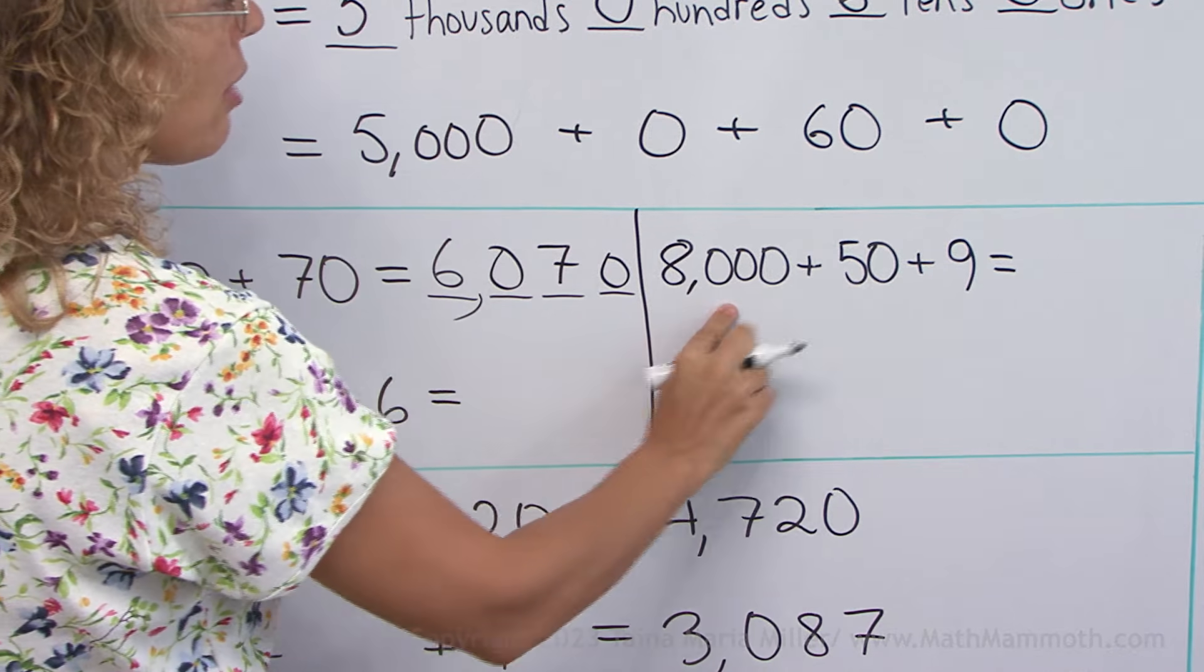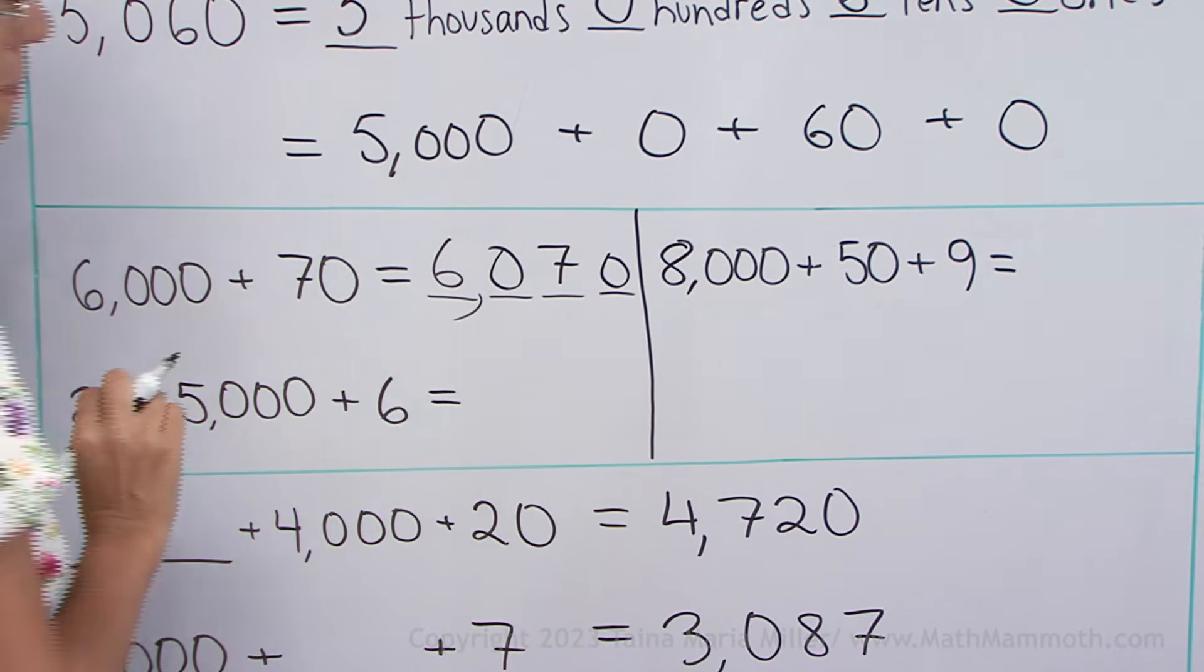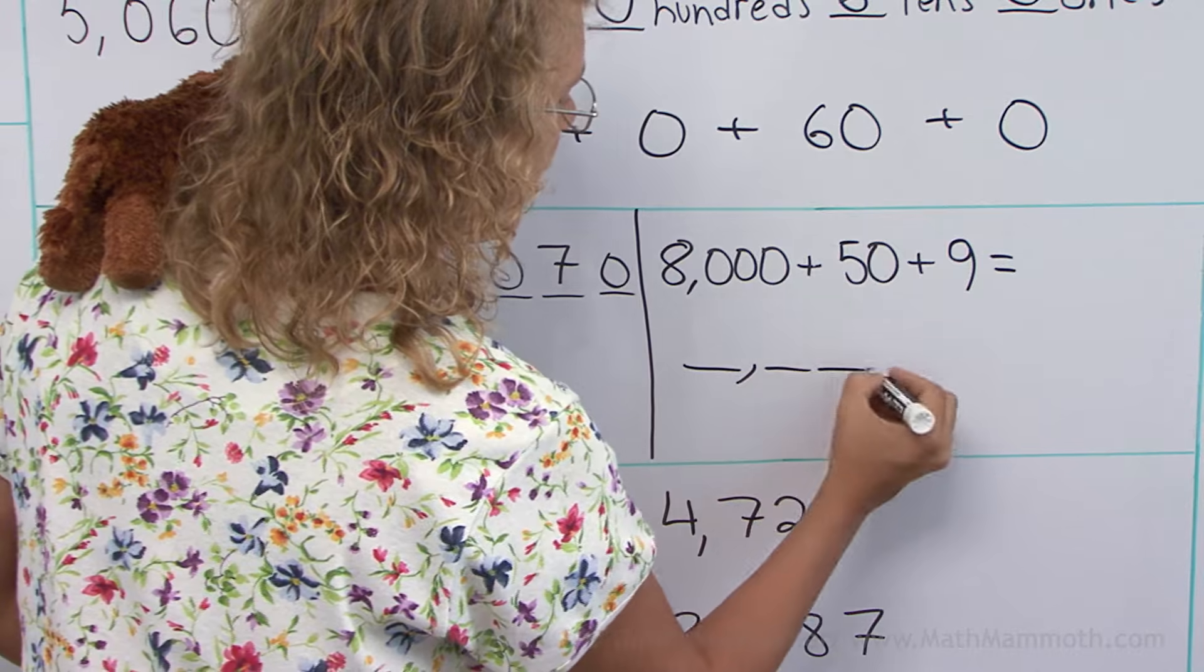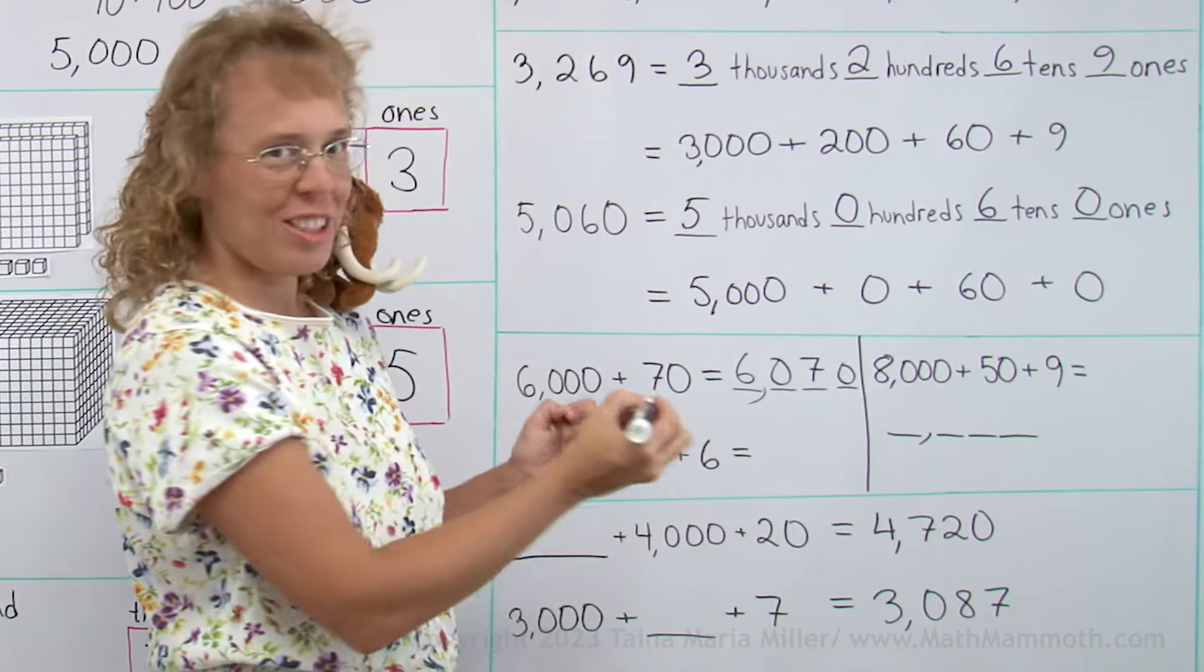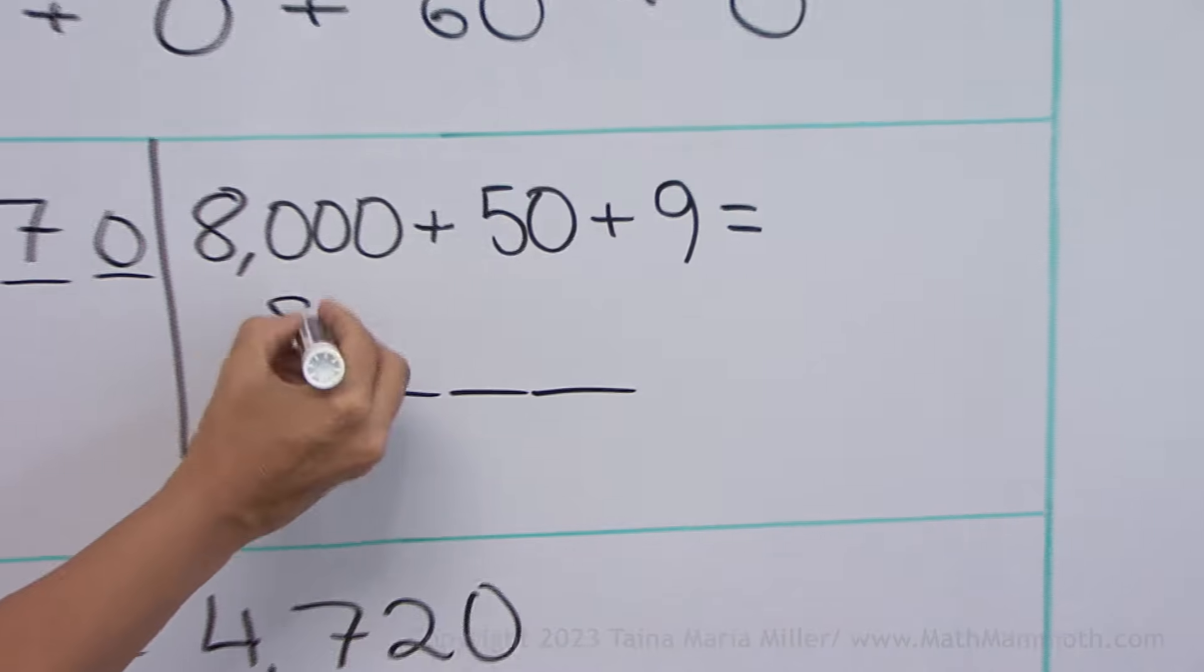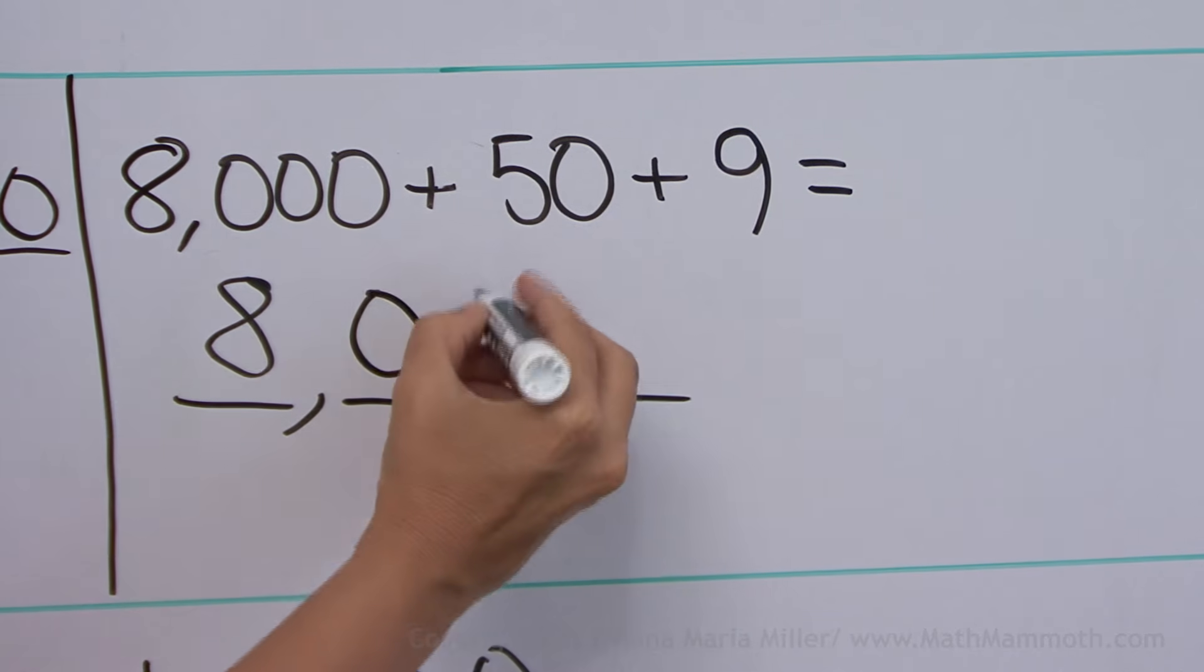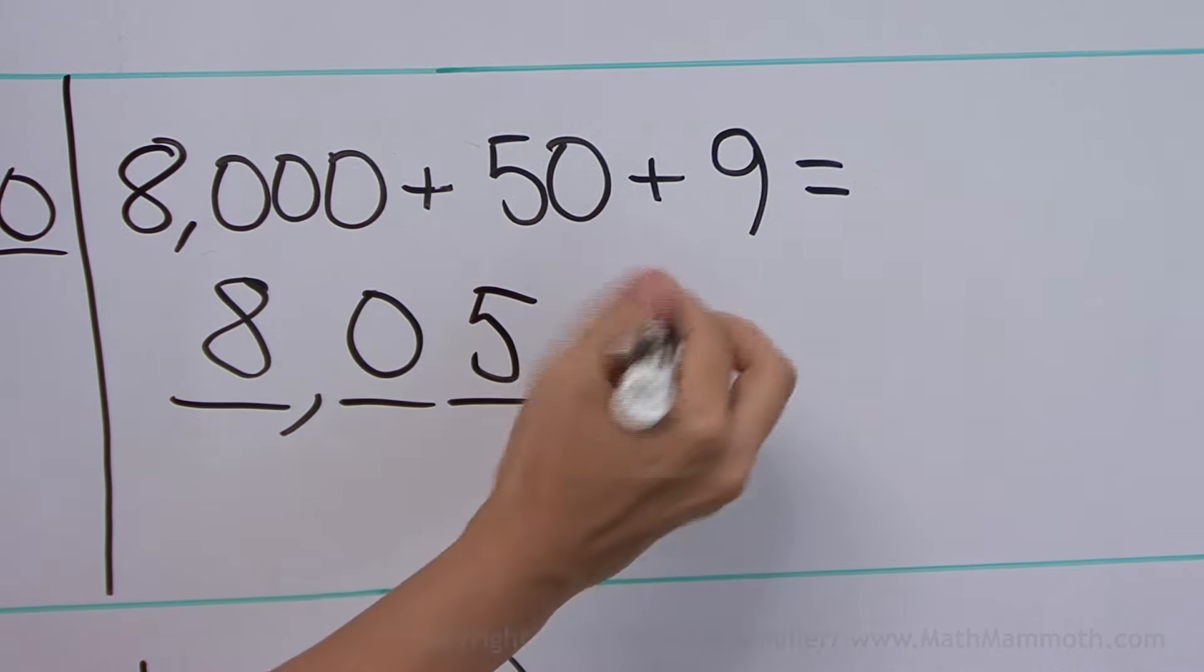How about eight thousand plus fifty plus nine? Okay again, if you feel this is difficult, then write yourself four lines for the four digits. Eight thousand here and then the hundreds, but there are no hundreds, so zero. And then five tens and nine.